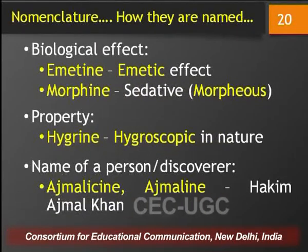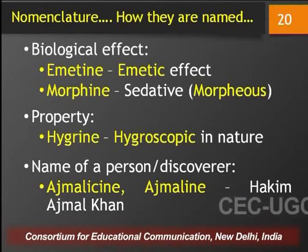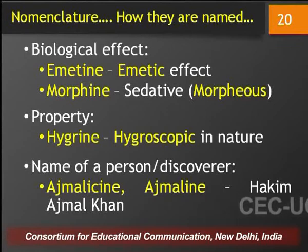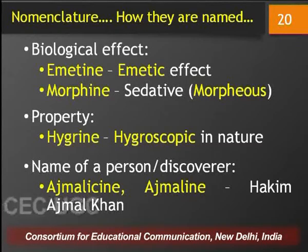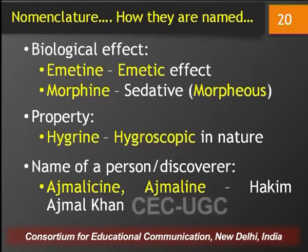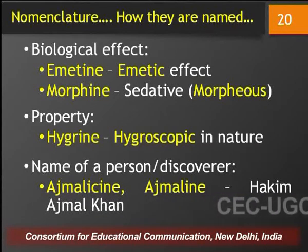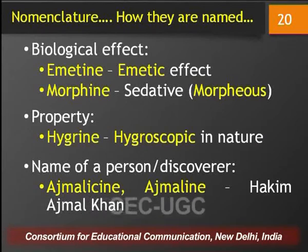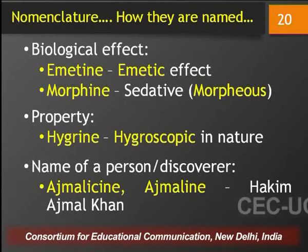Alkaloids are also named on the basis of their biological effect — for example emetine because of its emetic effect, and morphine whose name is derived from Morpheus, the god of sleep, since morphine has a strong sedative action. Alkaloids are also named on the basis of their property — for example hygrine, named because of its hygroscopic nature.